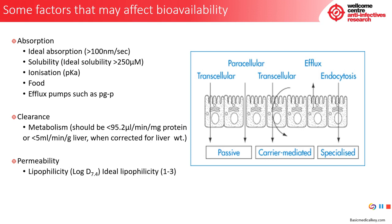Clearance by metabolism should ideally be less than 95.2 microliters per minute per milligram of protein, or less than 5 milliliters per minute per gram of liver when corrected for liver weight. Permeability is controlled by the degree of lipophilicity, where the ideal lipophilicity value is between 1 and 3.